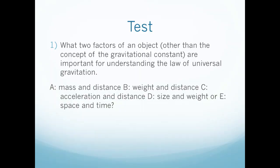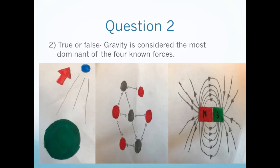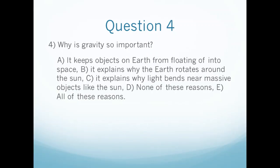Let's sum up what we have learned. Question 1: What two factors in the law of universal gravitation are important for understanding gravitational force? A. Mass and distance, B. Weight and distance, C. Acceleration and distance, D. Size and weight, or E. Space-time. Question 2: True or False — gravity is the weakest and most dominant of the four known forces. Question 3: In a vacuum, two objects with different masses fall at the same rate of what? Question 4: Why is gravity so important? A. It keeps objects on Earth from floating into space. B. It explains why the Earth rotates around the Sun. C. It explains why light bends near massive objects like the Sun. D. None of these reasons. Or E. All of these reasons.